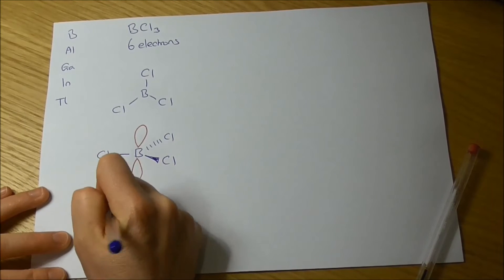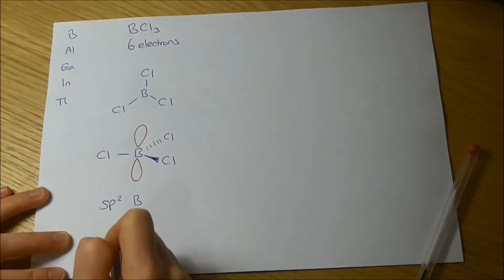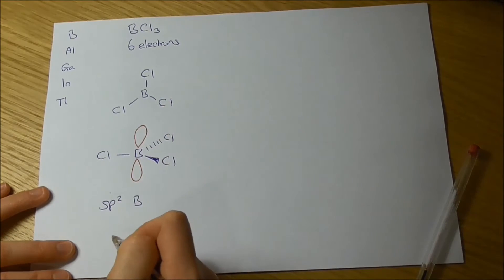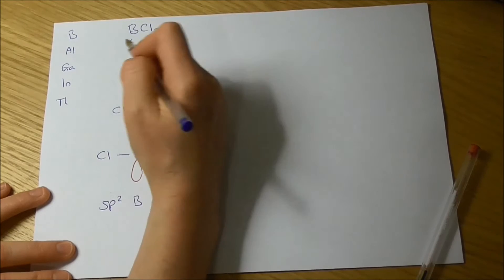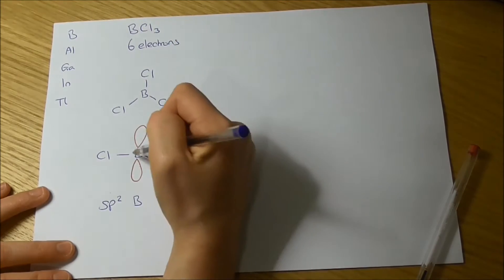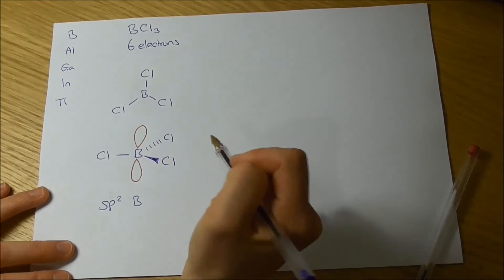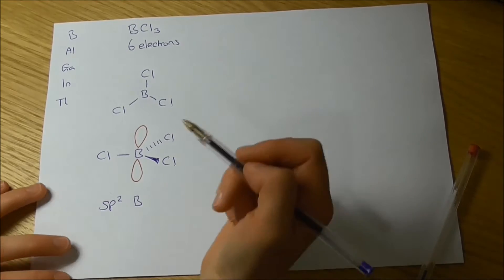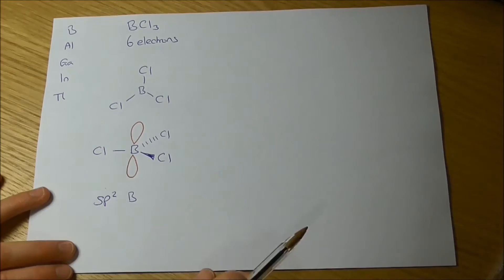So we have sp2 hybridized boron, three pairs of electrons sitting around the boron and an empty p-orbital. And because we only have six electrons around that central boron and an empty p-orbital, we call it electron deficient because the octet rule is not being satisfied.